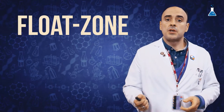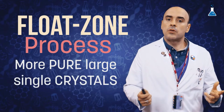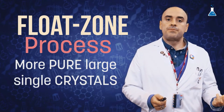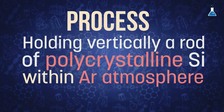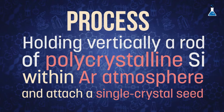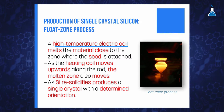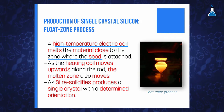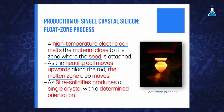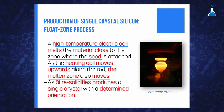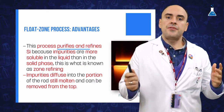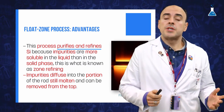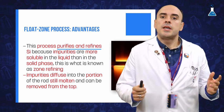The second type of process, the float zone process, produces more pure large single crystals of silicon than the Czochralski process. The process consists of holding vertically a rod of polycrystalline silicon within an argon atmosphere and attaching a single crystal seed to one end. A high-temperature electric coil melts the material in the zone where the seed is attached, and as the heating coil moves upwards along the rod, the molten zone also moves. When the silicon resolidifies, it produces a single crystal with a determined orientation. This process also has the advantage of purifying the product due to the fact that impurities are more soluble in the liquid phase than in the solid phase.